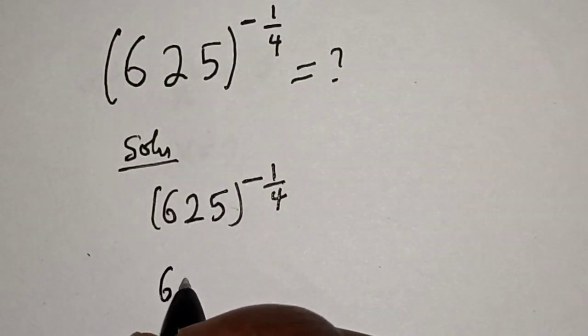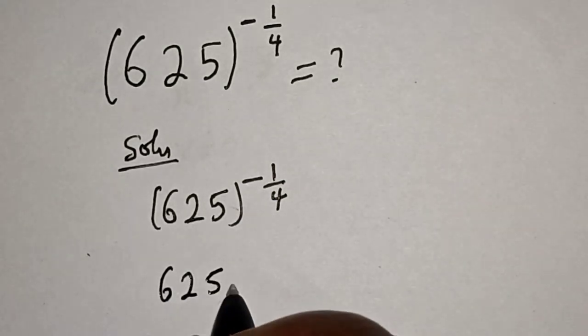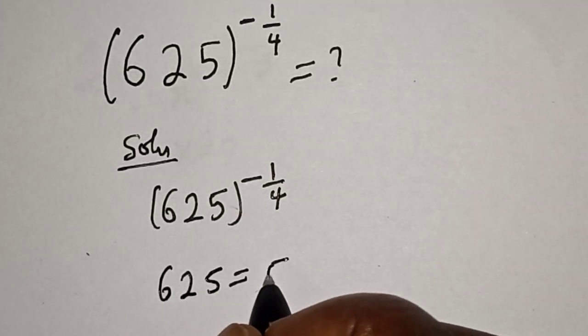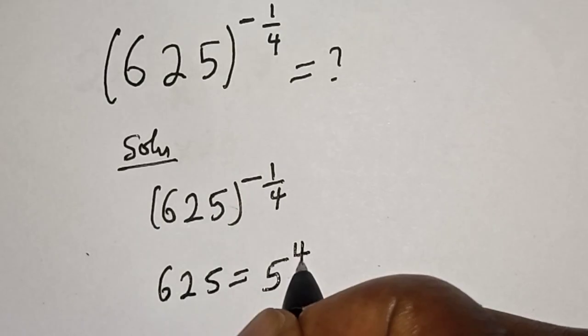Now, 625 is equal to 5 to the power of 4.